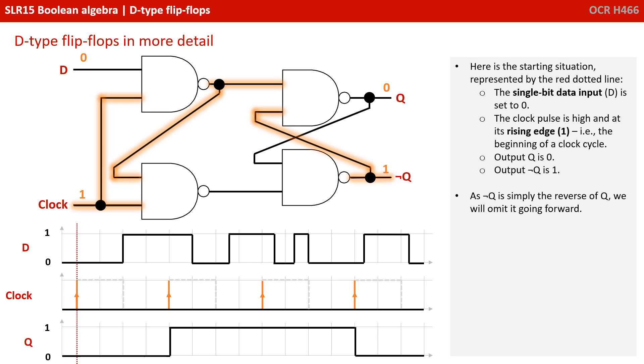Here's the starting situation again, represented by the red dotted line. We have the single bit data input D set to zero, the clock pulse is high and at a rising edge, one, so the beginning of a clock cycle. Output Q is zero and output NOT Q is one. Because NOT Q is simply the inverse of Q, we're going to omit that going forward.